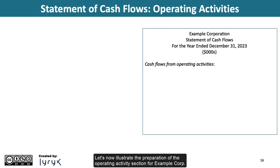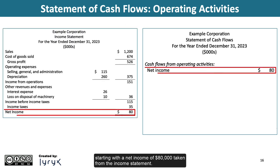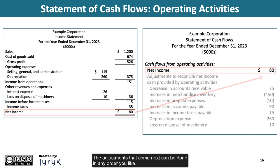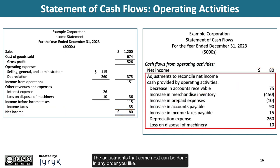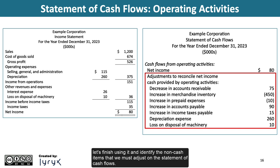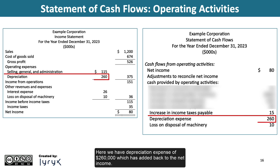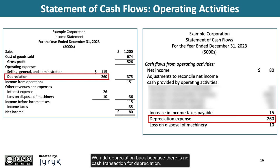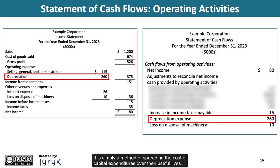Let's illustrate the preparation of the operating activities section for example corporation, starting with net income of $80,000 from the income statement. The adjustments can be done in any order. Here we have depreciation expense of $260,000, which is added back to net income. We add depreciation back because there is no cash transaction for depreciation — you can't write a check for it. It is simply a method of spreading the cost of capital expenditures over their useful lives.